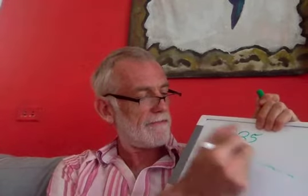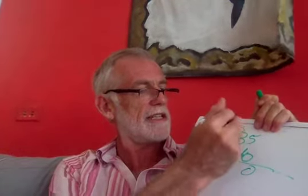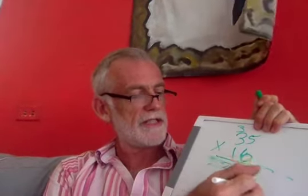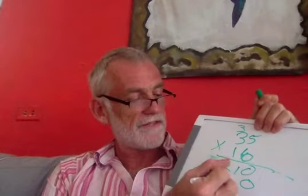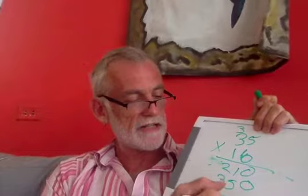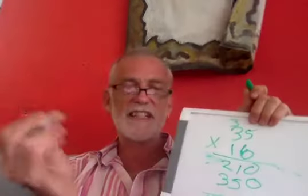I need to write this down. I thought I could do 35 times 16 in my brain, but I can't. 35 times 16: six times five is 30, six times three is 18, add the 3 — 210. Put a zero there because now we're multiplying by ten — 350. The answer is 560 glasses of water. That is one thirsty cow.